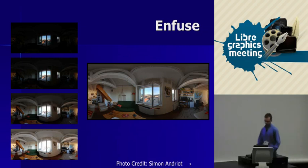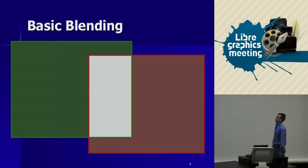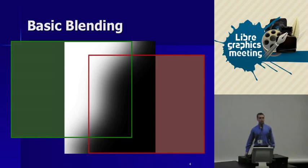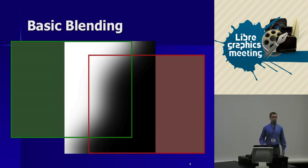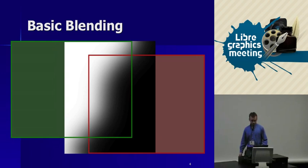So how do these tools work? The basic idea is you have a pair of images you want to blend together over some arbitrary overlap region. You come up with a blending function that sits on top of the overlap region. Where the blending function is white, the green image has 100% priority; where it's black, the red image has 100% priority. You get a nice smooth gradient across the overlap region, producing a blend you can't see.